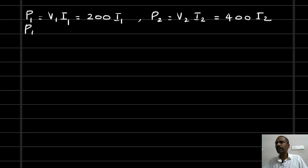It is given that P1 is equal to P2. So we can write 200 I1 equals 400 I2. So I2 can be written as I1 divided by 2.